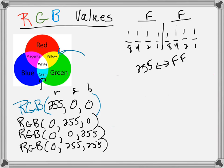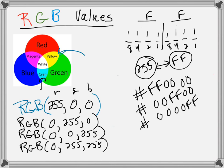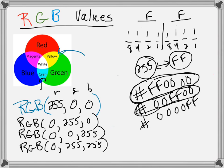FF is as high as we can go in hexadecimal, just as 255 is the max in a byte. The hexadecimal color code usually has a pound sign or hashtag before it. So #FF0000 is red, #00FF00 is green, and #0000FF is blue. You can look up a hexadecimal color chart online and use these codes in HTML — for example, font color equals the hashtag code.